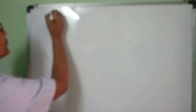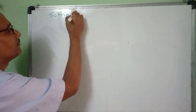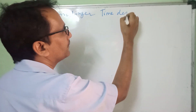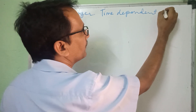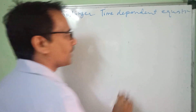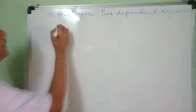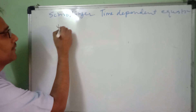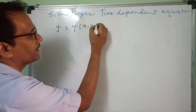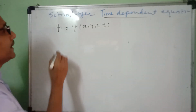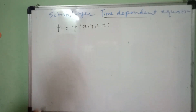This is the second part of this lecture on the Schrödinger time-dependent wave equation. In the presentation part, we discussed the wave function psi, which is a function of x, y, z, and t. That is why the time-dependent term is used here. The properties of this wave function have been mentioned in that presentation.